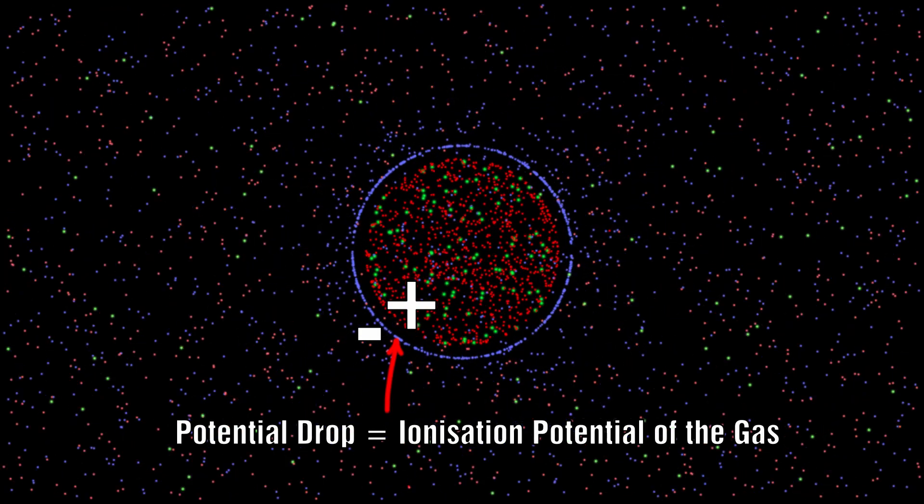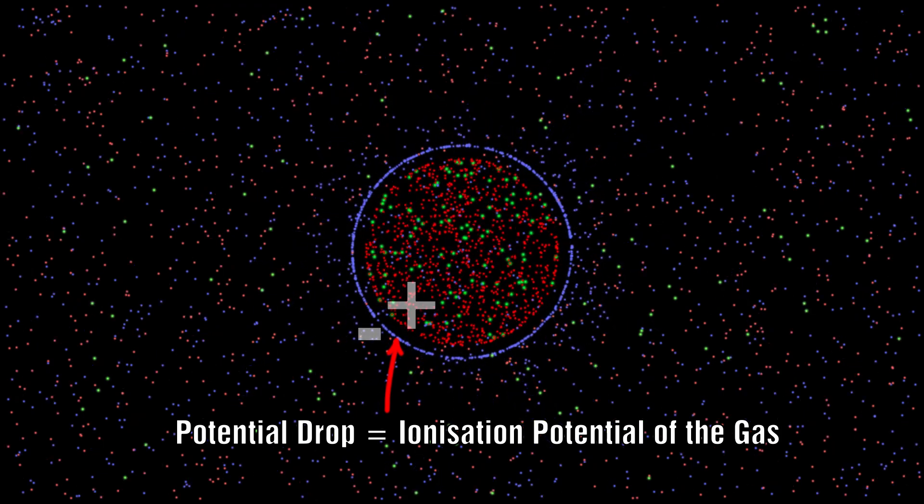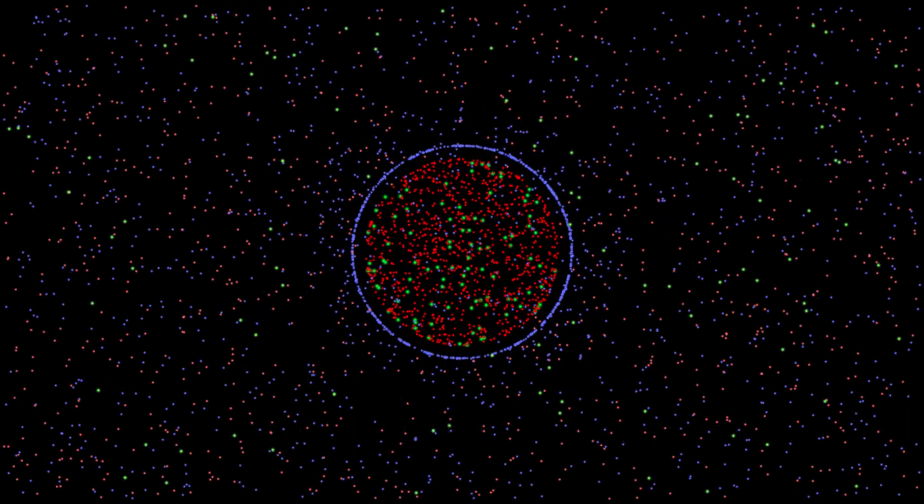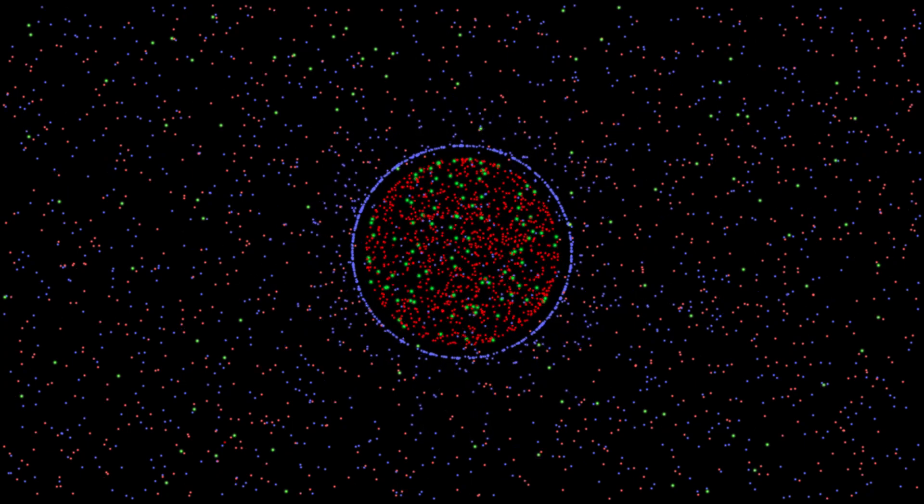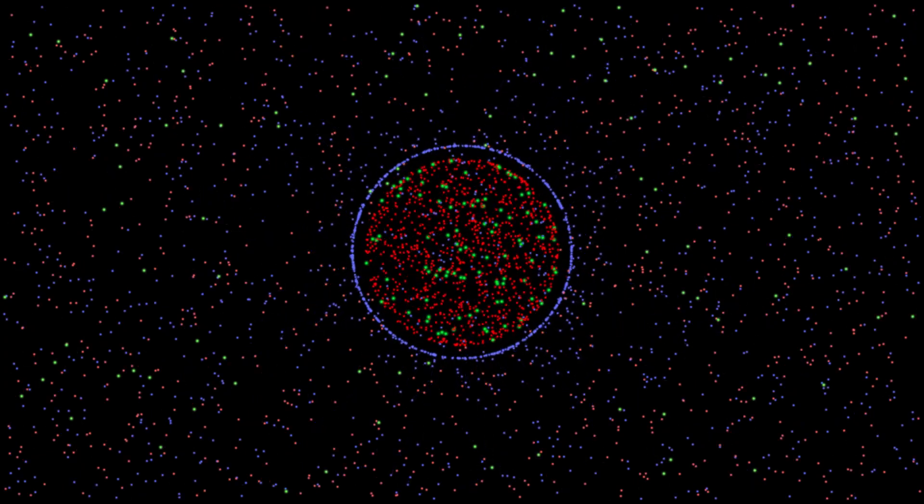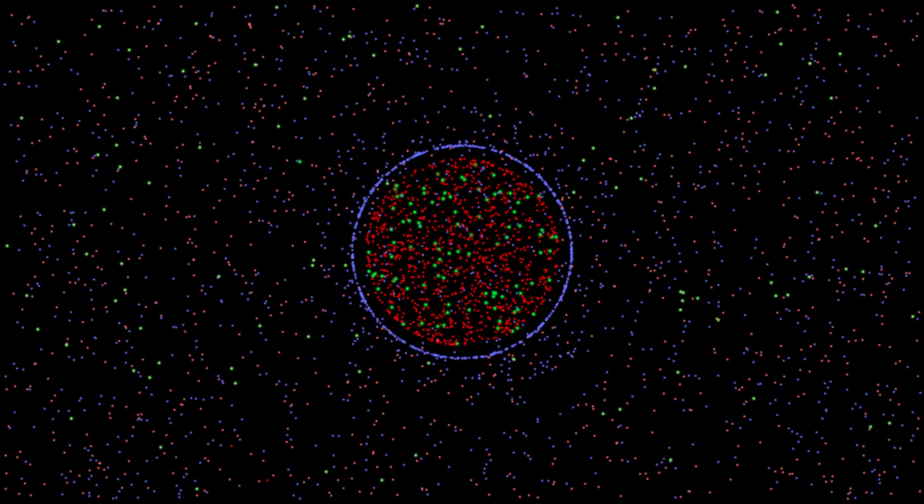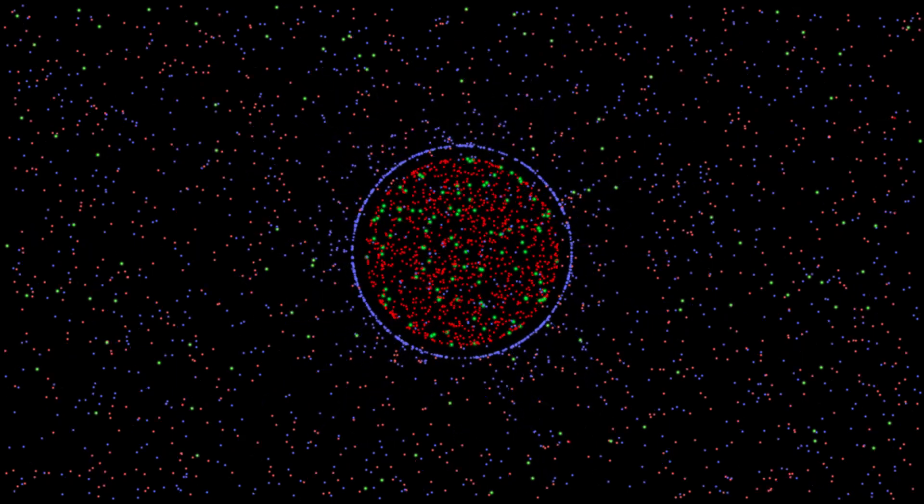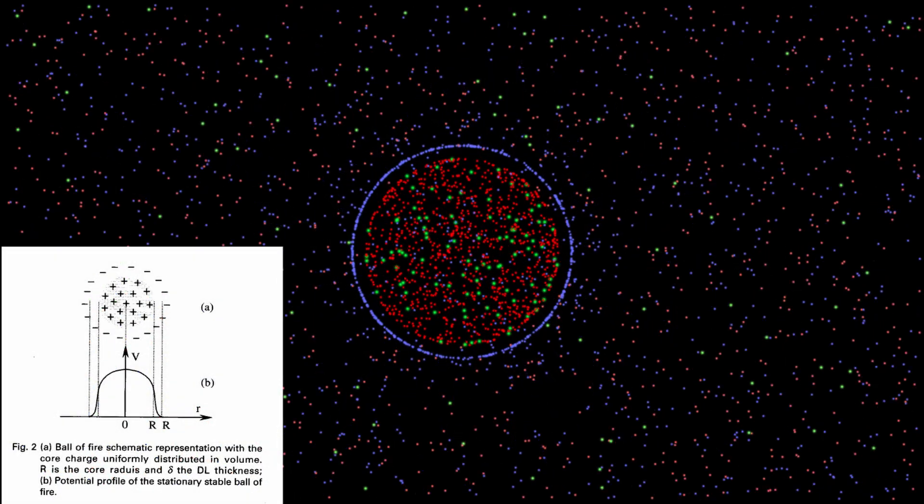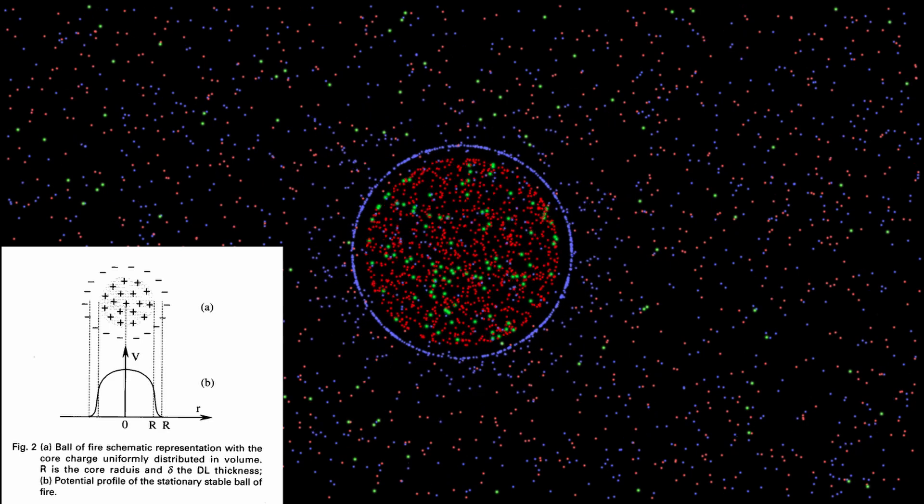From the experimental results they were able to confirm that these stationary stable spherical double layers that formed around the plasma were electrically neutral as a whole. The outer part of the double layer was negatively charged and the inner surface would be positively charged.